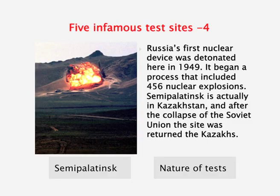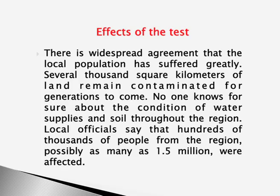Semipalatinsk is another case: Russia's first nuclear device was detonated there in 1949, and in total it hosted 456 nuclear explosions. Semipalatinsk is actually in Kazakhstan, and after the collapse of the Soviet Union, the site was returned to the Kazakhs. Much of the testing done there was overground with no protection offered to people. Several thousands of square kilometers of land remain contaminated for generations. Local officials say that hundreds of thousands — possibly as many as 1.5 million — people were affected.